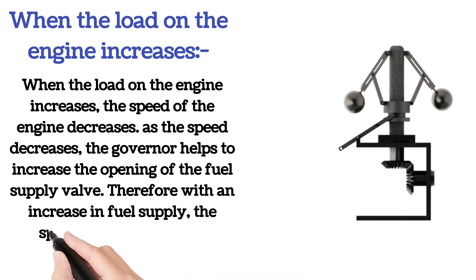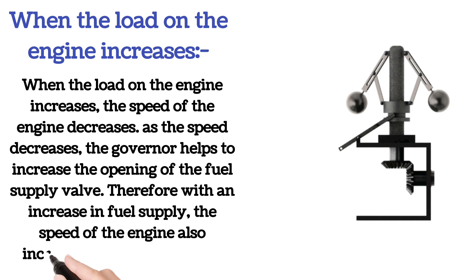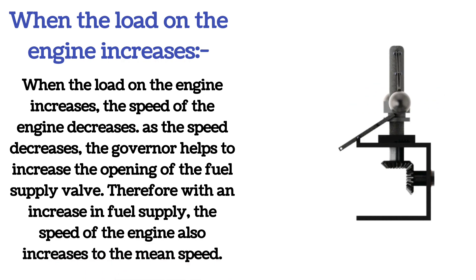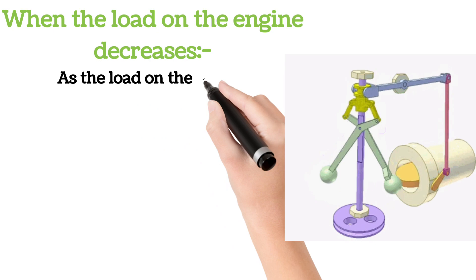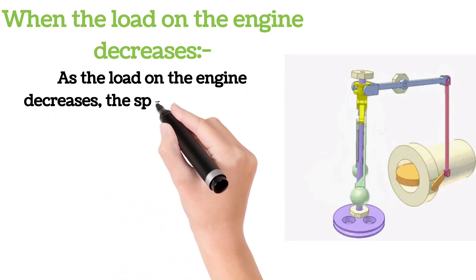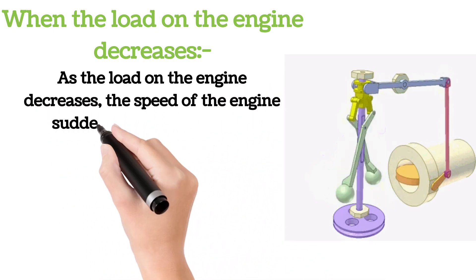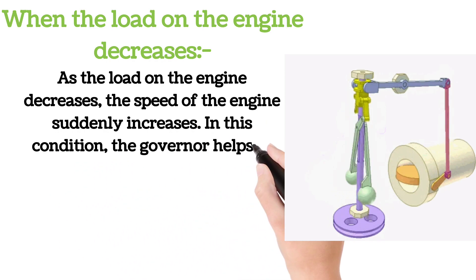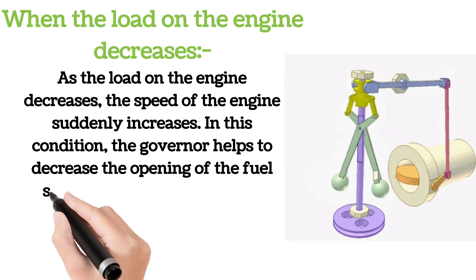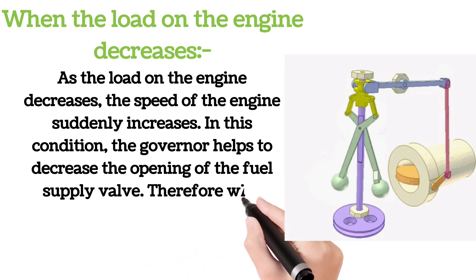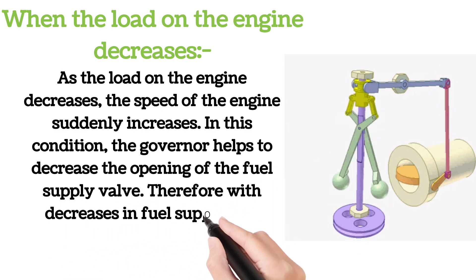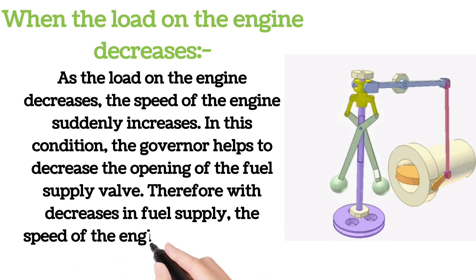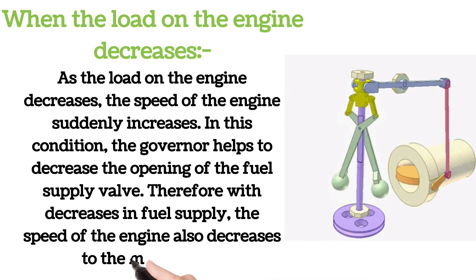Therefore, with an increase in fuel supply, the speed of the engine increases back to the mean speed. As the load on the engine decreases, the speed of the engine suddenly increases. In this condition, the governor helps to decrease the opening of the fuel supply valve, and therefore with a decrease in fuel supply, the speed of the engine decreases back to the mean speed.